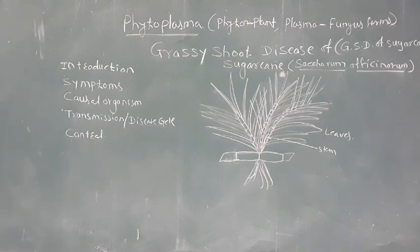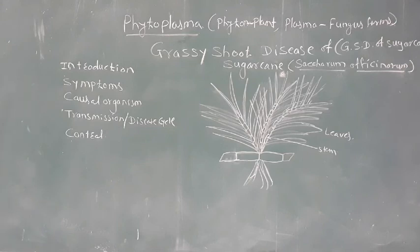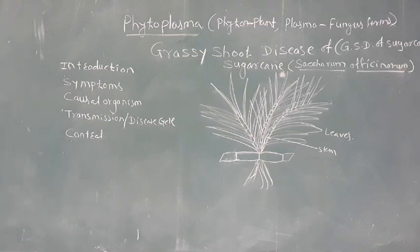Phytoplasma was formerly known as mycoplasma. Recently, phytoplasma and mycoplasma have been separated. Mycoplasma includes organisms which can produce diseases in plants as well as animals, but phytoplasma produces diseases only in plants. These organisms are very small, spherical to filamentous in shape, non-motile, facultative parasites, and they lack chlorophyll.